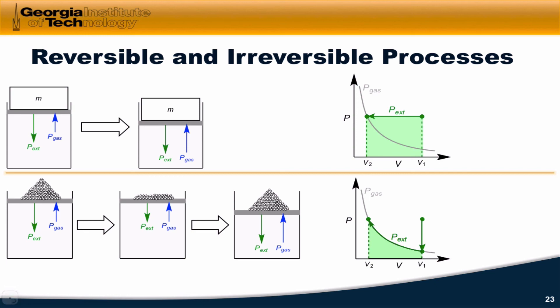When we compress a gas rapidly on mass like this, this was path one, this is an irreversible compression. Note that because we're compressing the system, delta S for the ideal gas system is less than zero. However, delta S for the surroundings, because the process releases heat, must be greater than zero.